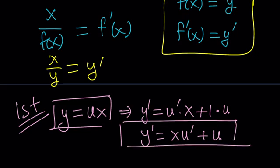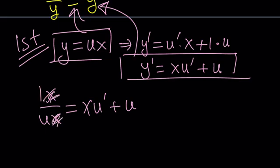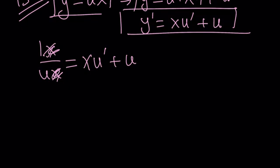Let's go ahead and plug these two things into our equation. If y equals ux, then x over ux gives us 1 over u, and that equals xu prime plus u. So we have 1 over u equals xu prime plus u. Let's isolate xu prime and write it as 1 over u minus u. I'm hoping this is going to turn into a separable differential equation.